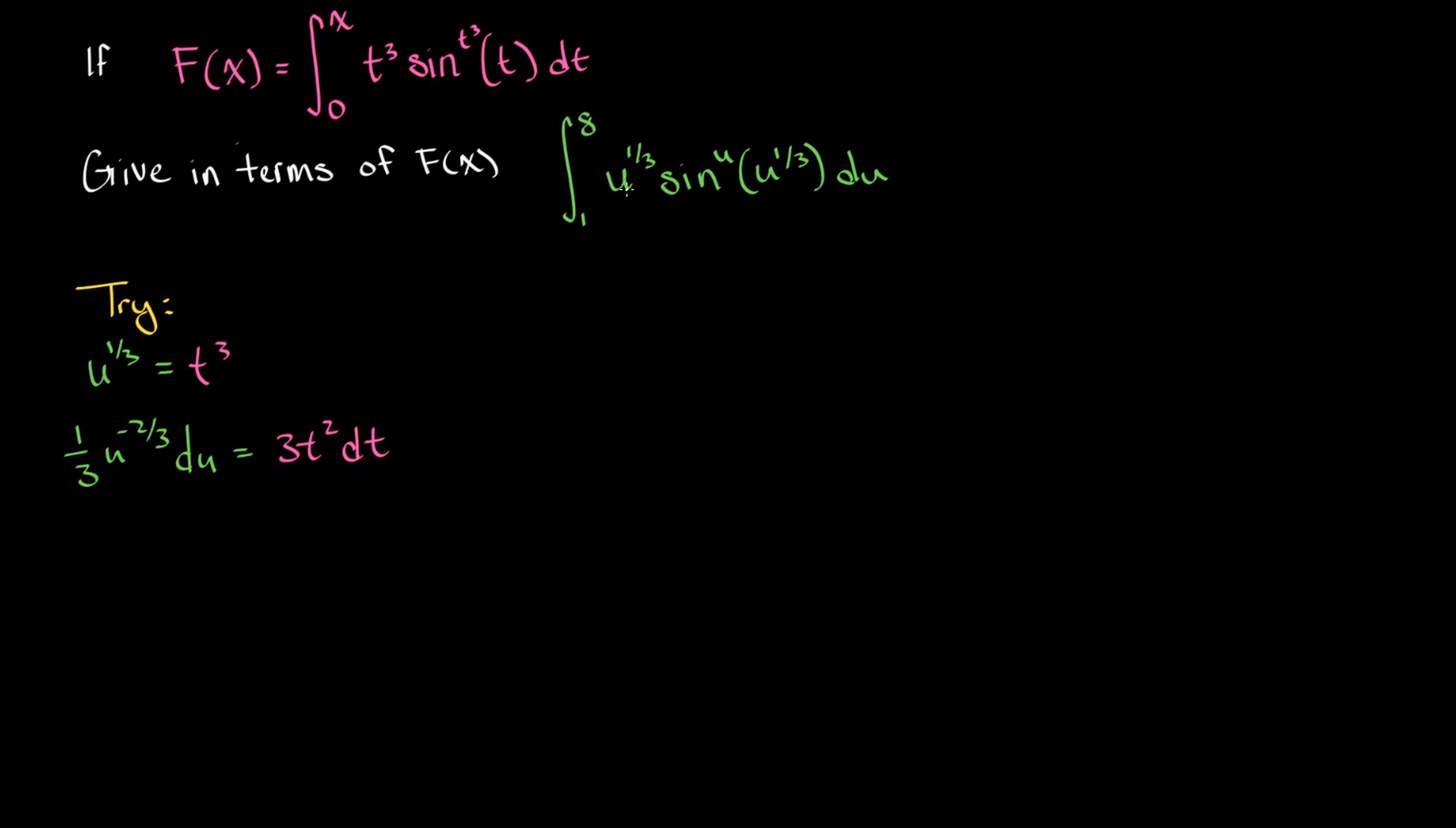What else could we try? Rather than looking at this u to the one-third power, let's look at the exponent on our sine function here. We have a u and we have a t cubed. So what if we were to now try letting u be equal to t cubed?